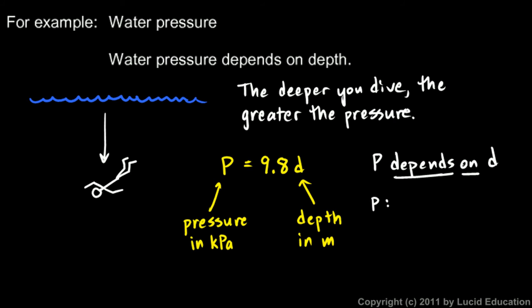P is what we call the dependent variable, because it depends on the other variable—on the value of the other variable. The value of P depends on the value of d.